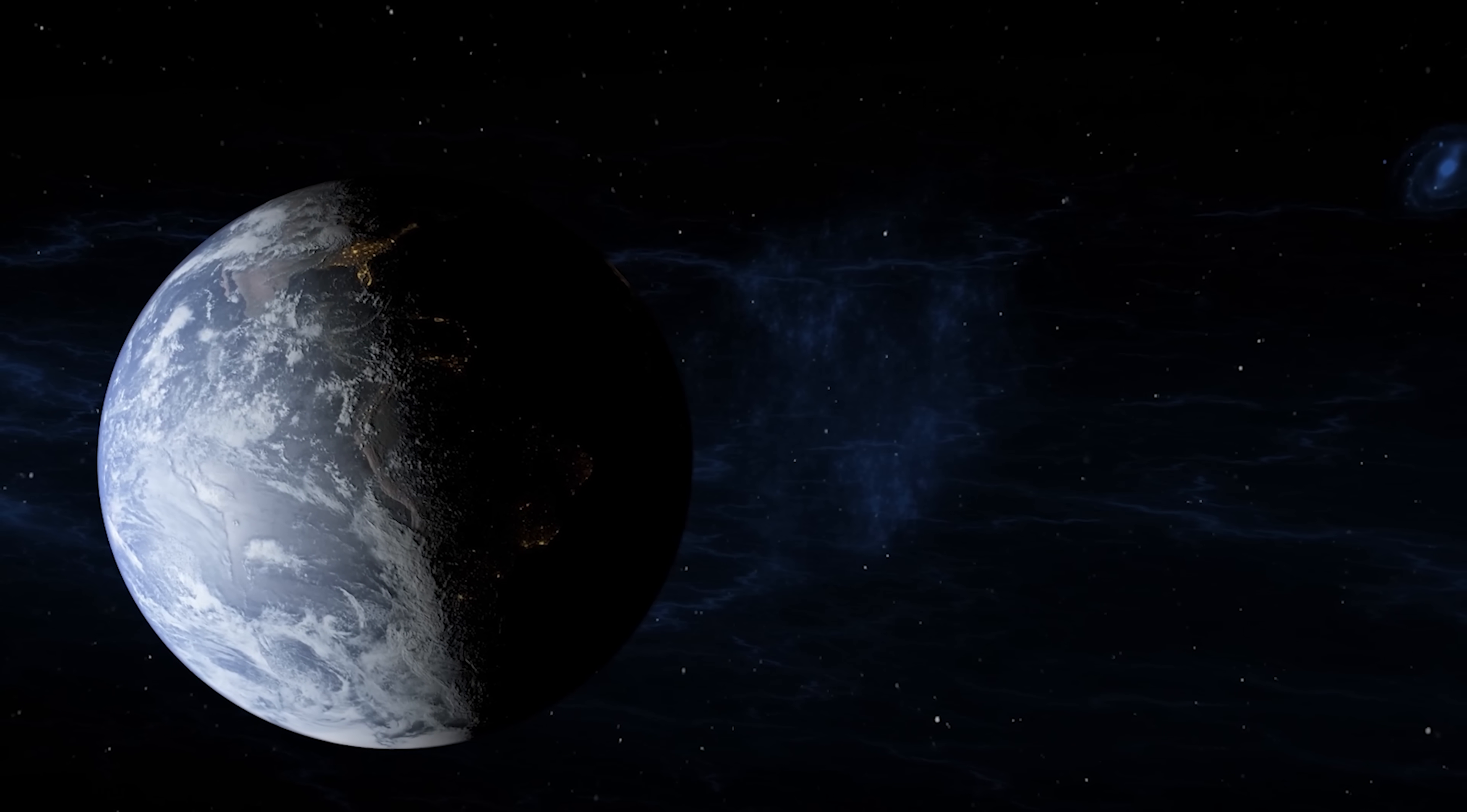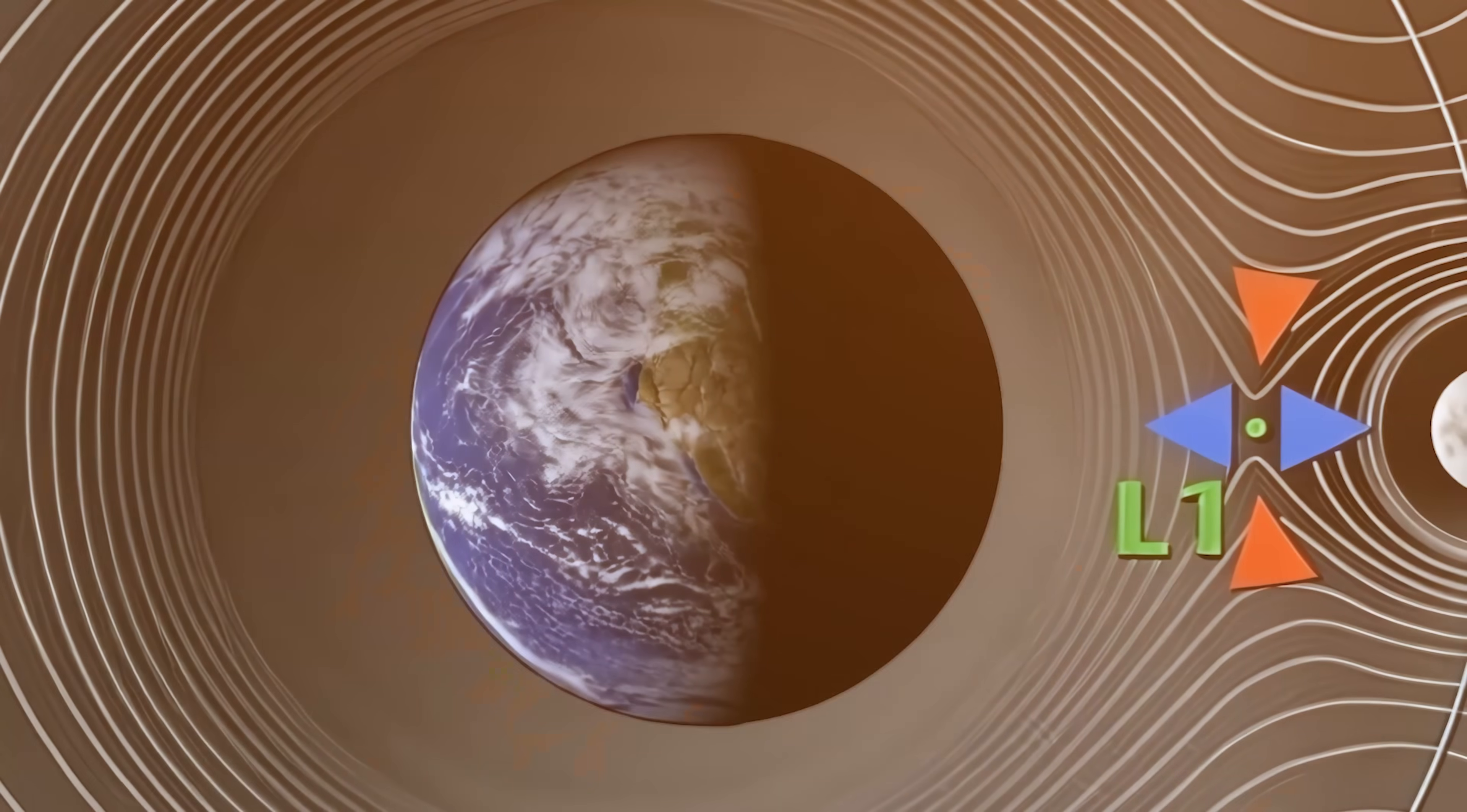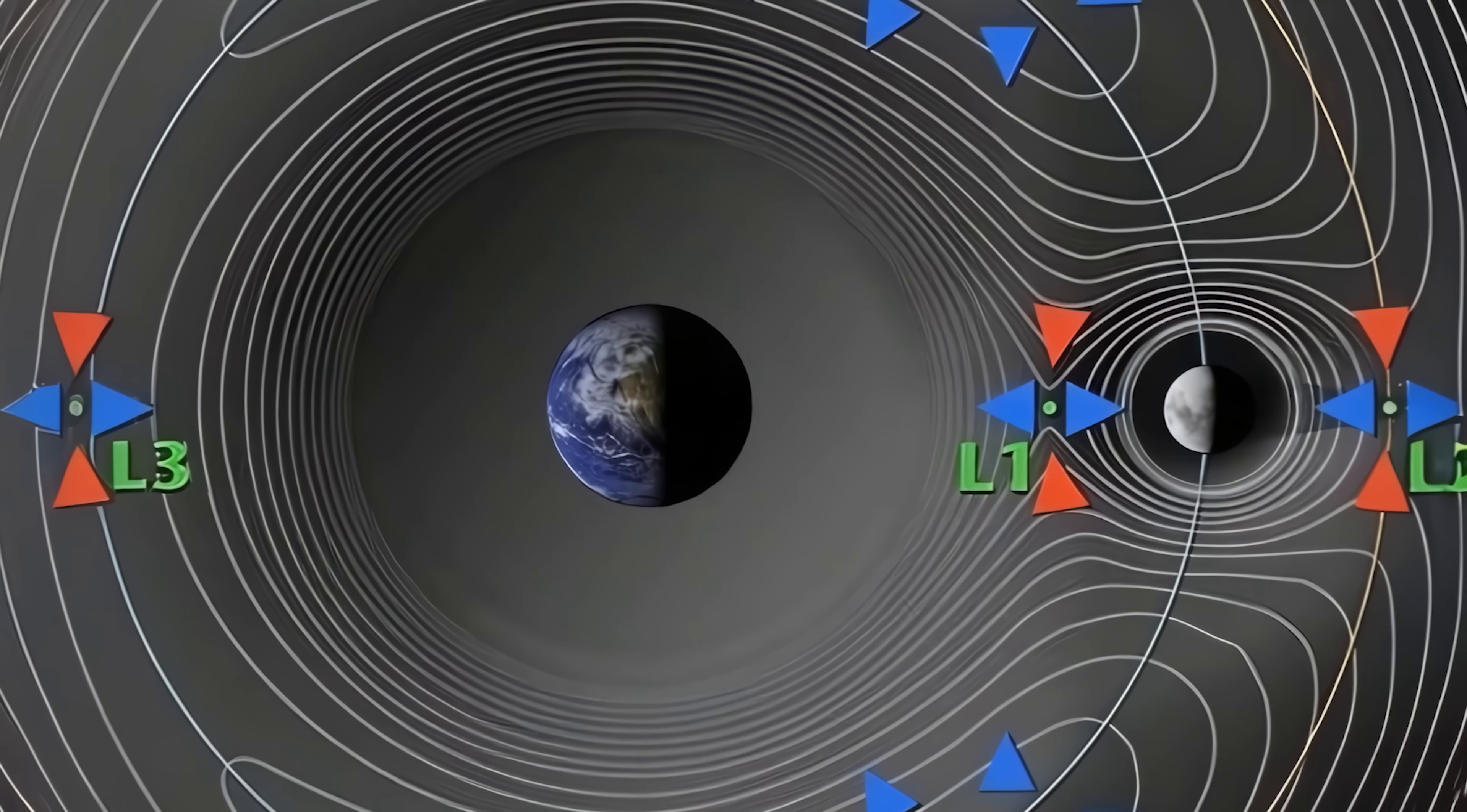The scientific community's rejection wasn't just academic pride talking. These objects exist in what are called Lagrange points, specific locations where the gravitational pull of Earth and the moon creates a kind of cosmic balance. Imagine balancing a pencil on your finger. There's one perfect spot where it stays upright. Lagrange points are similar cosmic balance points, and astronomers had calculated exactly where they should be. The problem was, when they looked at these points, most saw absolutely nothing.